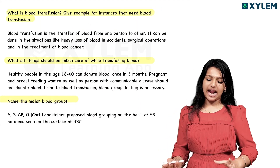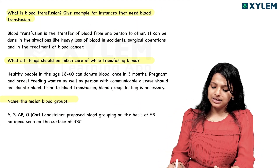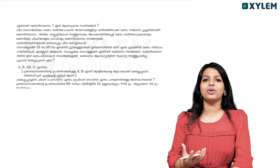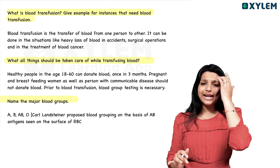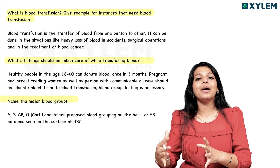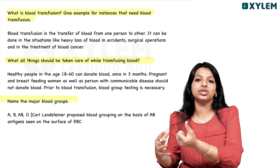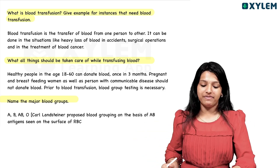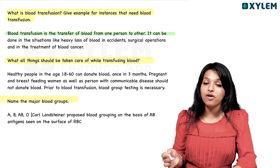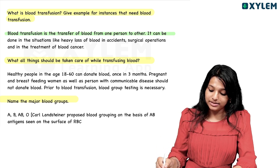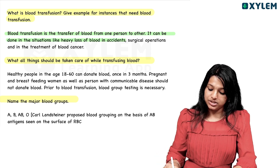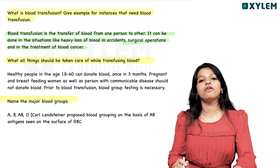What is blood transfusion? Blood transfusion is a transfer of blood from one person to another. It can be done in situations like heavy loss of blood in an accident, surgical operations, and in the treatment of blood cancer.